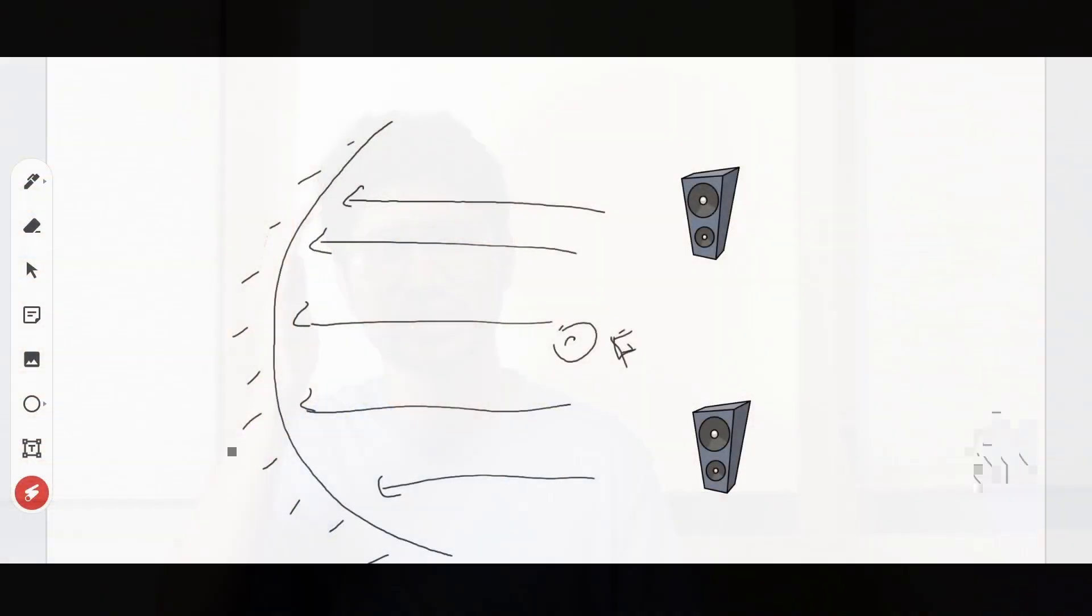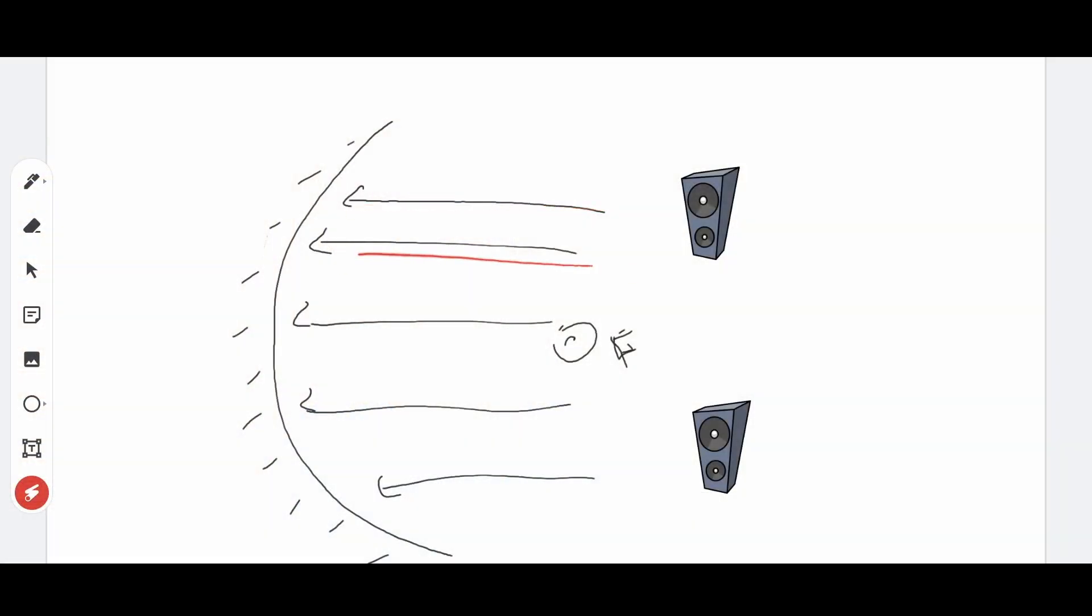Whenever there is a curved surface, waves falling on it will reflect in a concentrated way towards a point. This creates a focal point for sound in an auditorium, creating an imbalance in sound.